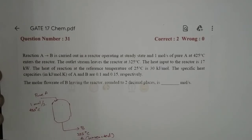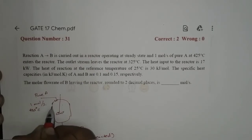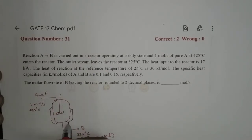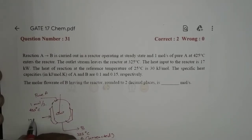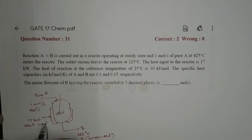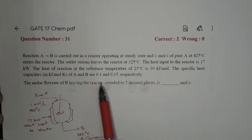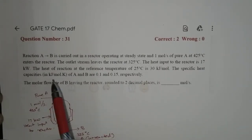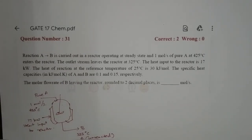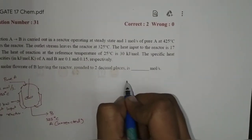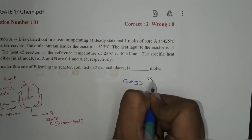Let's say the heat input to the reactor comes from a jacket, steam coil, hot oil, or heat source, and the heat source value is 17 kilowatts — this is the heat input to the reactor. Now let's go to the energy balance.